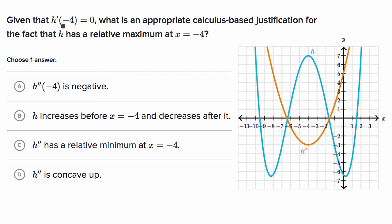We're told that given h prime of negative four is equal to zero, what is an appropriate calculus-based justification for the fact that h has a relative maximum at x equals negative four? Right over here we have the graph of our function h — this is y equals h of x — and we don't have the first derivative graphed, but we do have the second derivative graphed here in orange, h prime prime. Given that h prime of negative four equals zero, meaning the first derivative at x equals negative four is zero, you can see that the slope of the tangent line when x equals negative four does indeed equal zero.